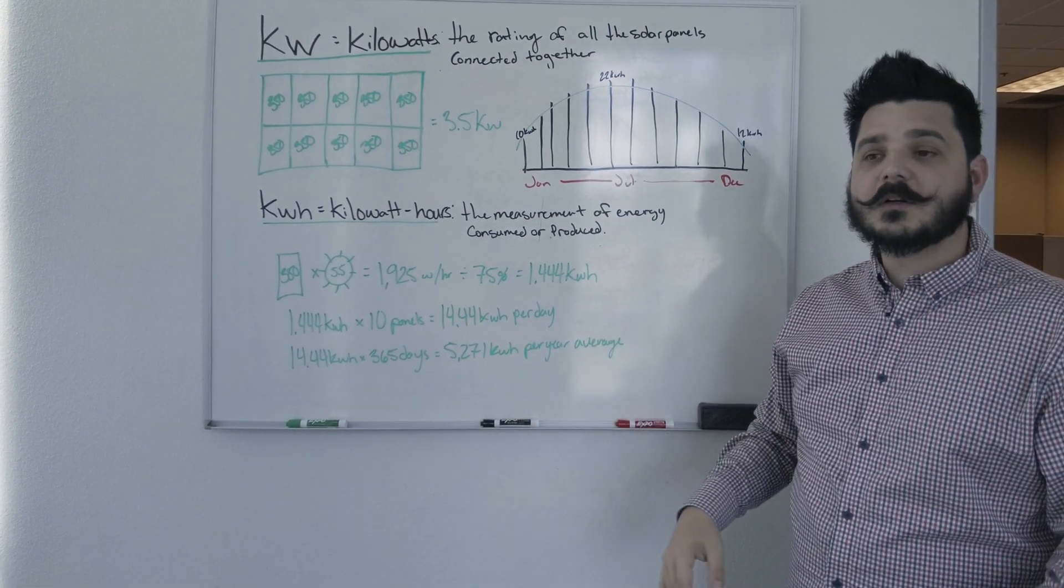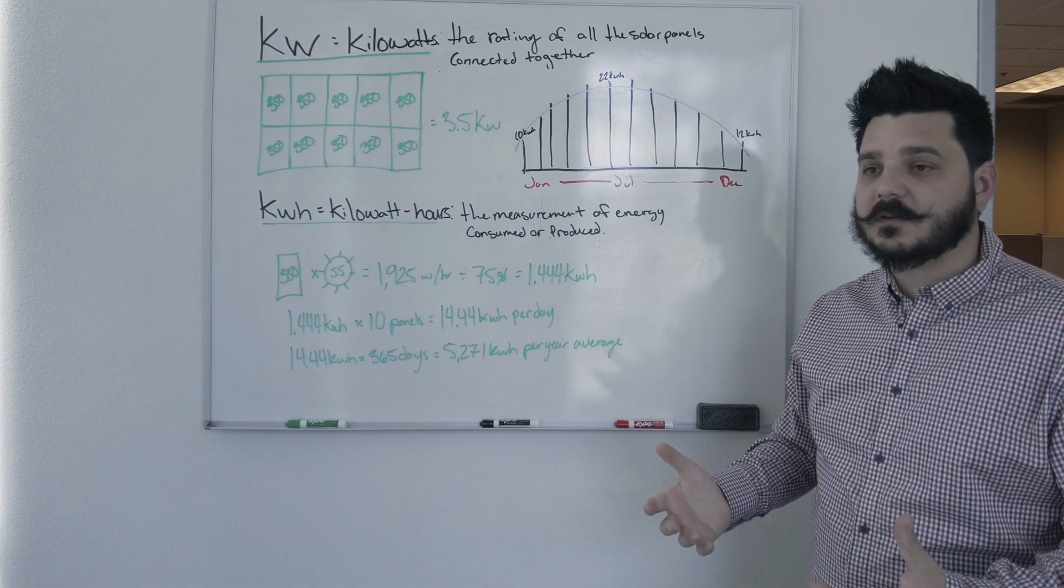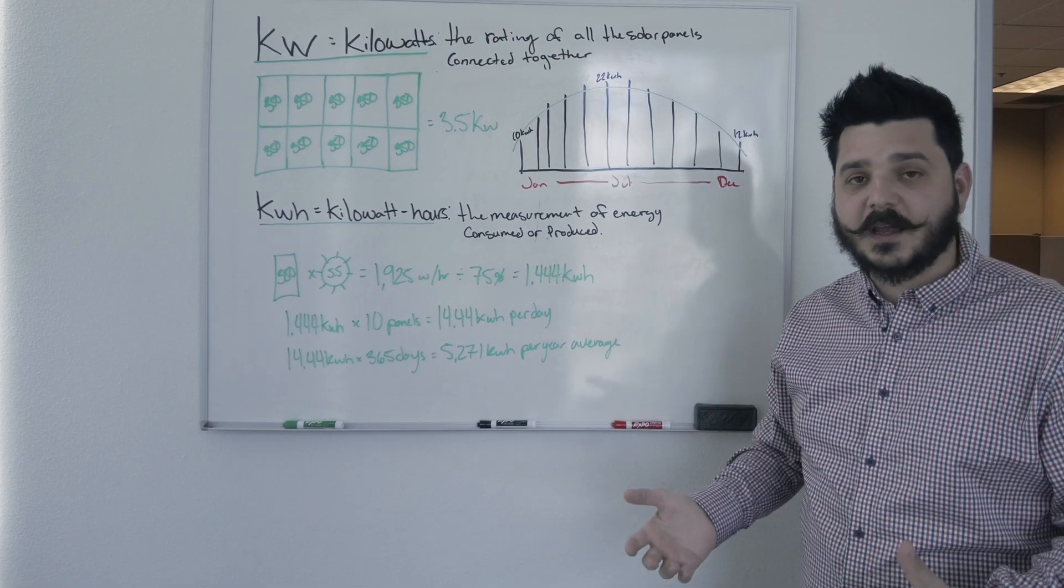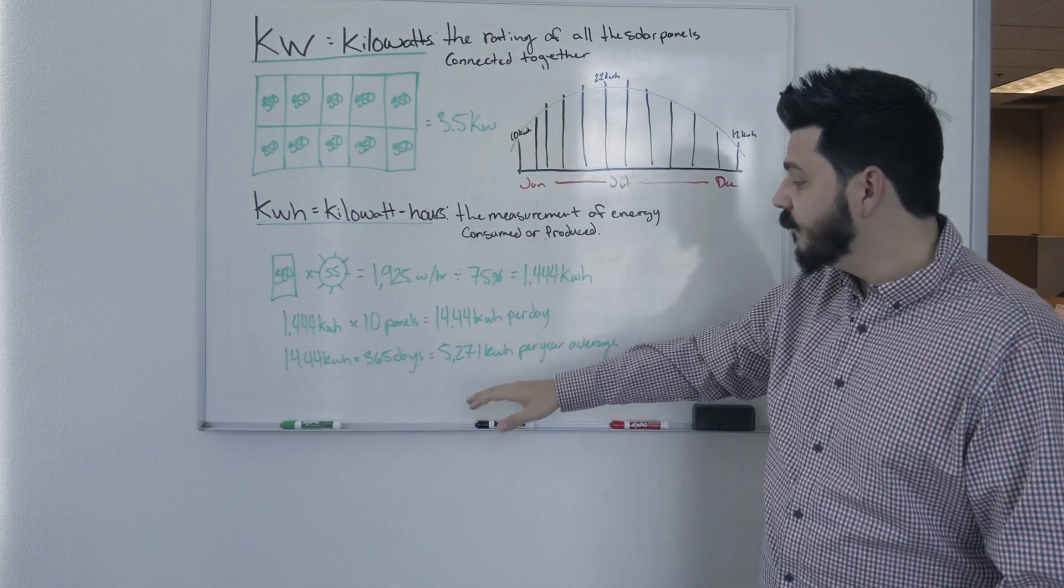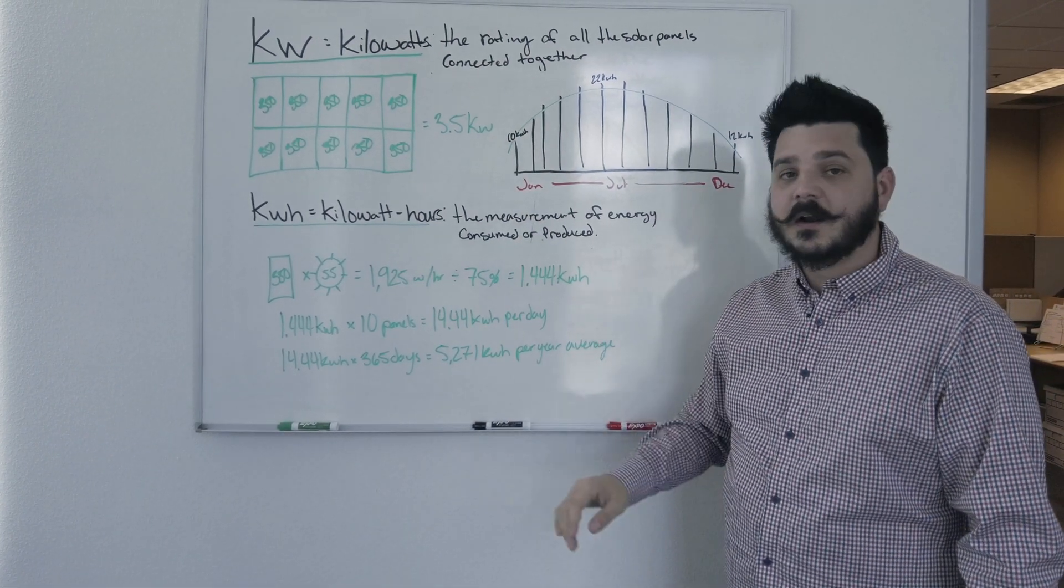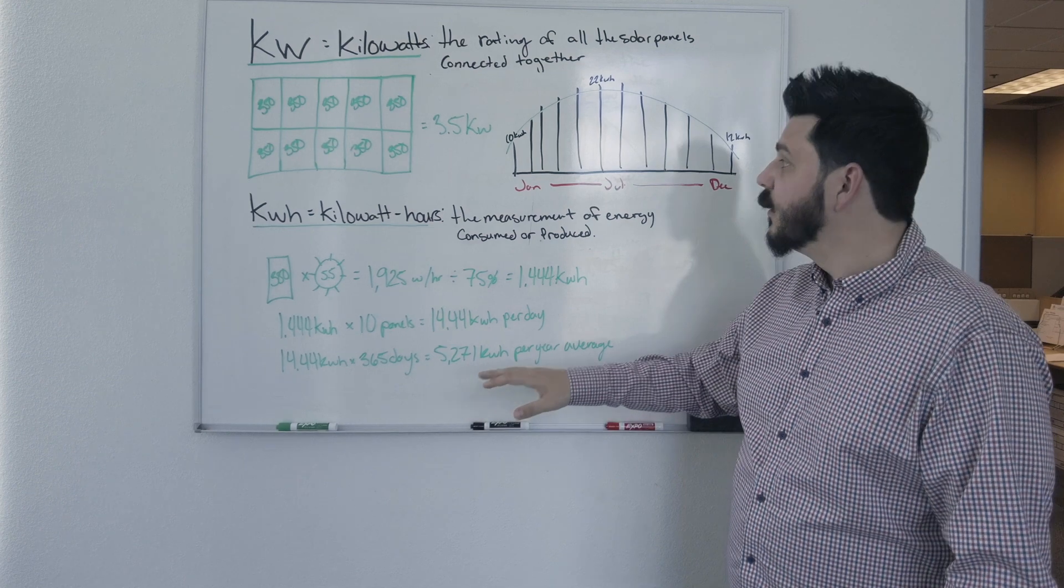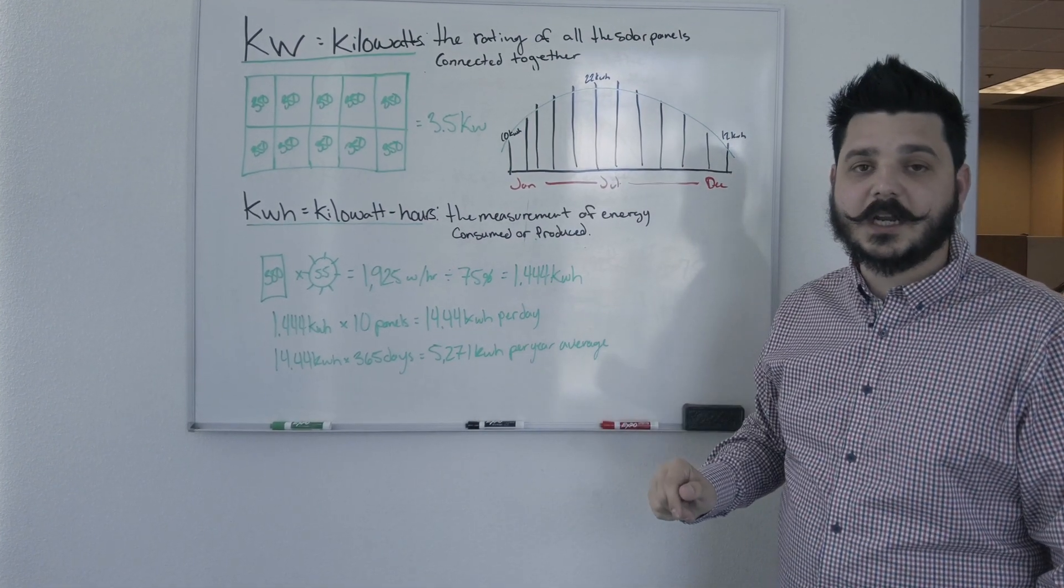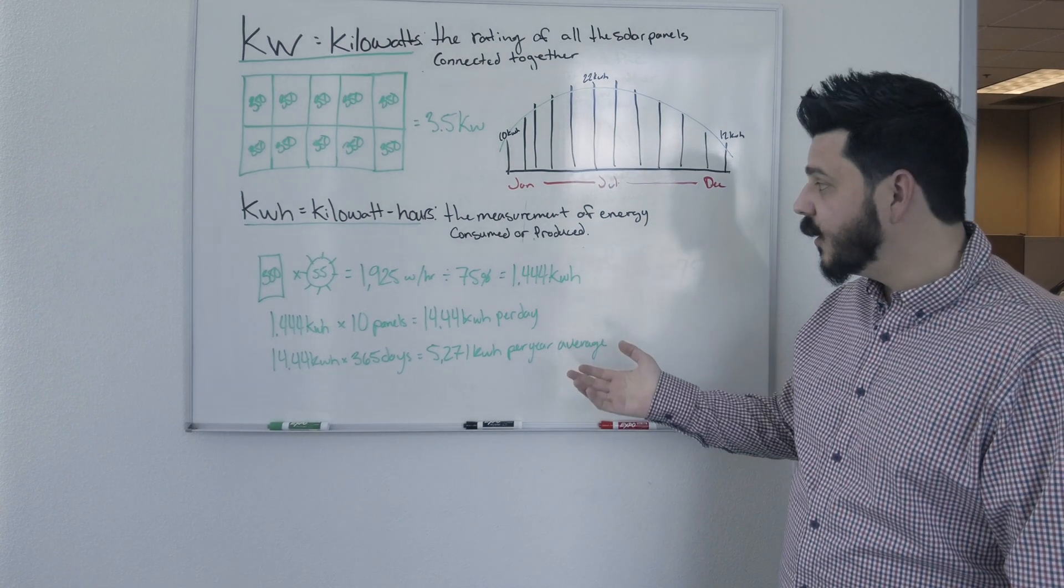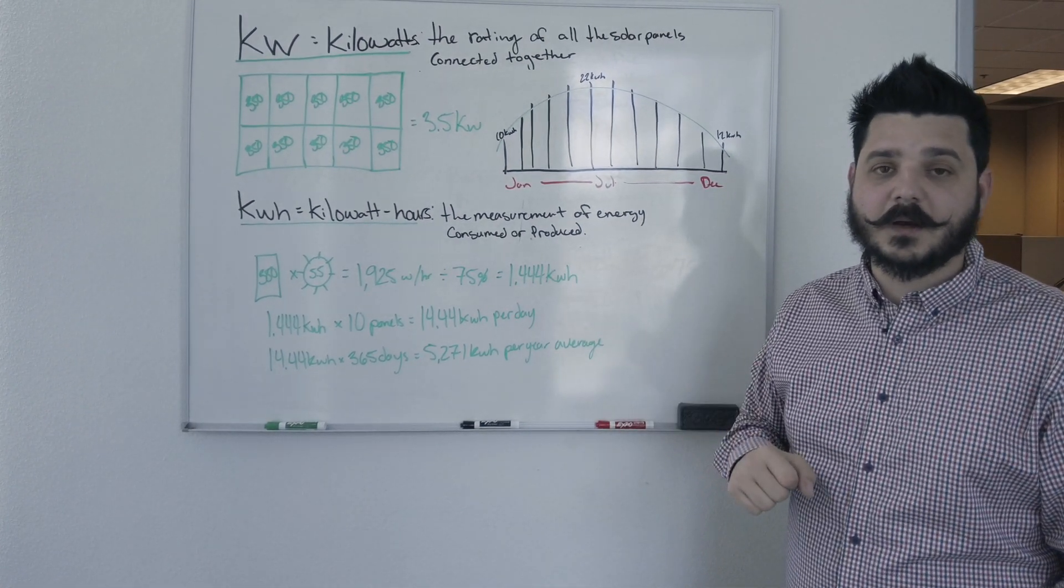And that's what's important when you're deciding on the value of that solar system, and if it's going to offset enough of your energy throughout the year. So for this example, if you were to consume per year 5,000 kilowatt hours, this solar system would offset 100% of your energy needs throughout the year. So you should, in theory, end up with a zero utility bill.